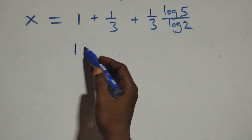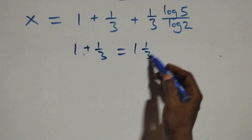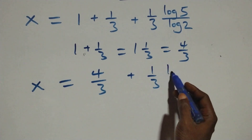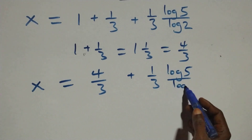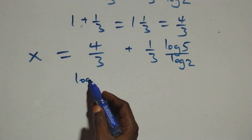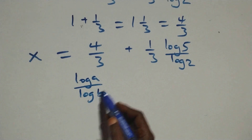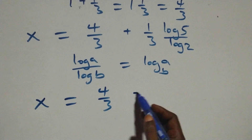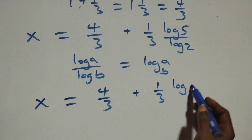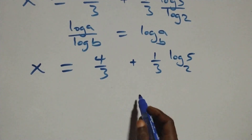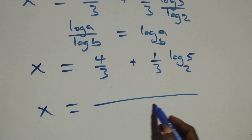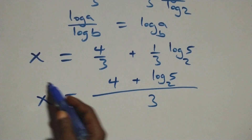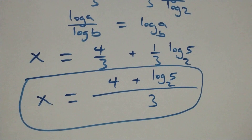We apply the change of base rule: log A over log B is the same as log A to base B. So log 5 over log 2 becomes log 5 base 2. This gives x equals 4/3 plus (1/3) log 5 base 2. Bringing into one fraction, x equals (4 plus log 5 base 2) over 3.